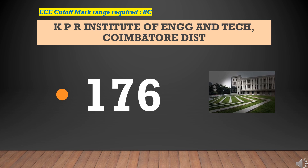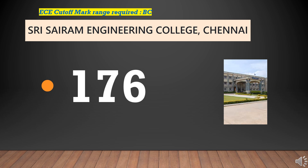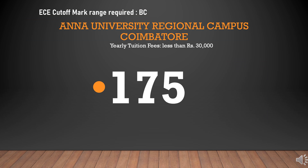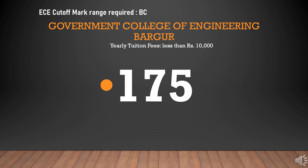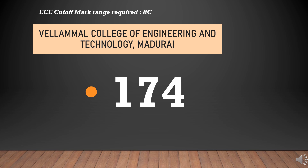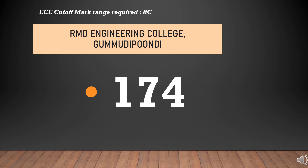KPR Institute of Engineering and Technology Coimbatore District: Cut-Off Required for ECE BC is 176. Shri Sairam Engineering College: Cut-Off Required for ECE BC is 176. Anna University Regional Campus Coimbatore: Cut-Off Required for ECE BC is 175 (Yearly Tuition Fees Less Than Rupees 30,000). Government College of Engineering Bargore: Cut-Off Required for ECE BC is 175 (Yearly Tuition Fees Less Than Rupees 10,000). Vellamal College of Engineering and Technology: Cut-Off Required for ECE BC is 174.